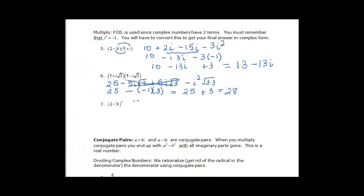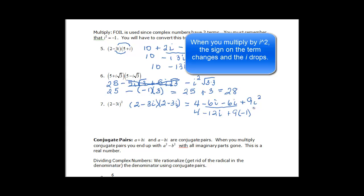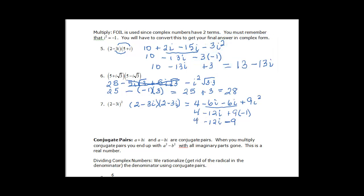The most sure way to get it right is to rewrite it: 2 minus 3i times 2 minus 3i, then do the FOIL. 2 times 2 is 4, 2 times negative 3i is minus 6i, same again for the inside terms, and the last terms give a positive since negative times negative: 3 times 3 is 9, and i times i is i squared. So we have 4 minus 12i, plus 9 times negative 1. That gives us 4 minus 12i minus 9, so negative 5 minus 12i.